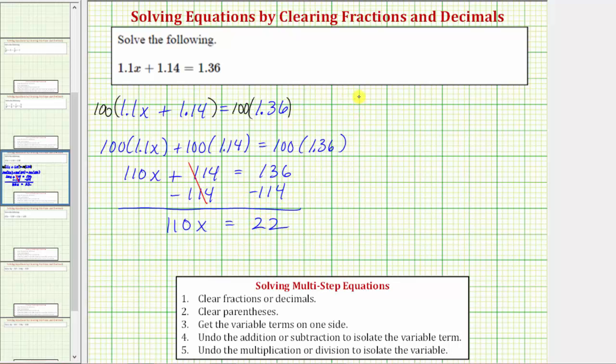Now we have a one-step equation: 110x equals 22. Because 110x means 110 times x, we need to undo this multiplication by performing the inverse operation. To undo multiplying by 110, we divide both sides by 110.